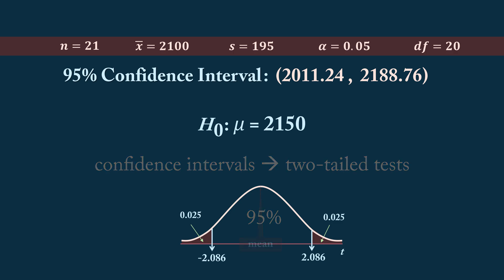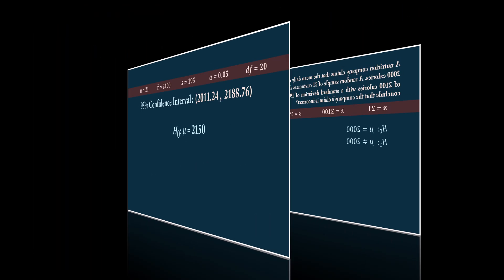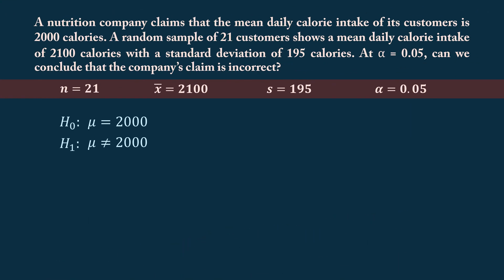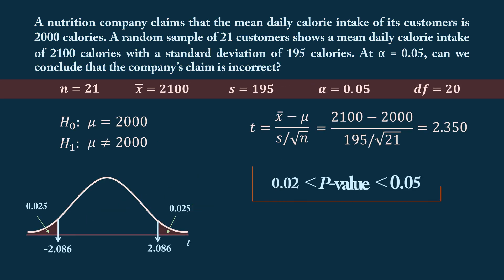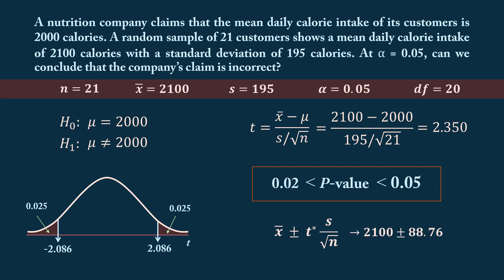And that's it. We've shown how to conduct a two-tailed one-sample t-test using the critical region approach, the p-value approach, and the confidence interval approach. Thank you very much.